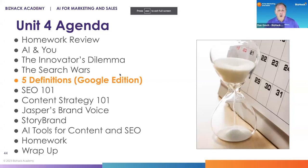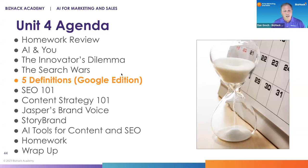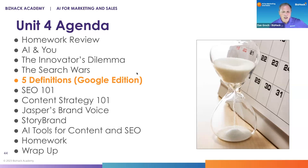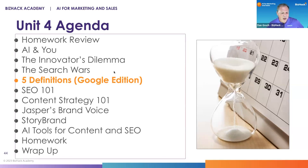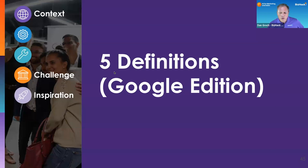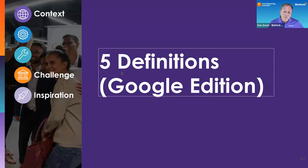We're going to do our Google edition. Today's theme is largely about Google because you can't talk about content strategy and search without talking about Google. We've spent a lot of time talking about Microsoft up until now, so Google really deserved its fair share. For our five definition segment, we're going to do the Google edition of the five definitions.